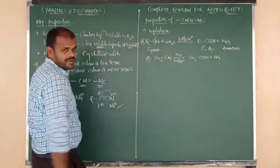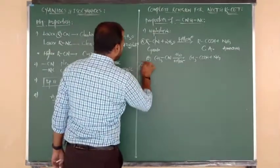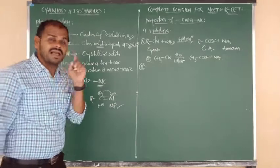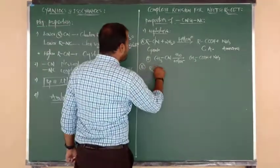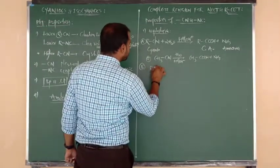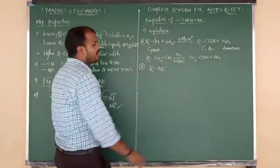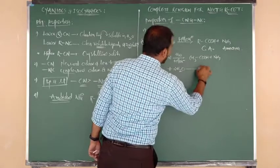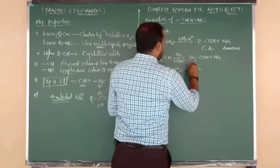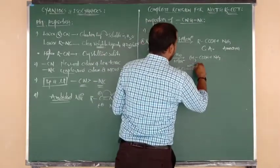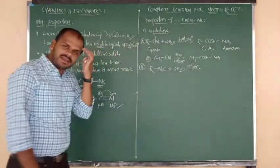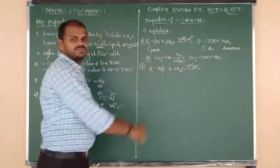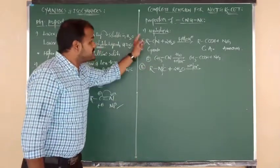Examples: CH3CN (acetonitrile) upon hydrolysis in acidic or basic medium gives acetic acid + ammonia. Benzonitrile gives benzoic acid + ammonia.